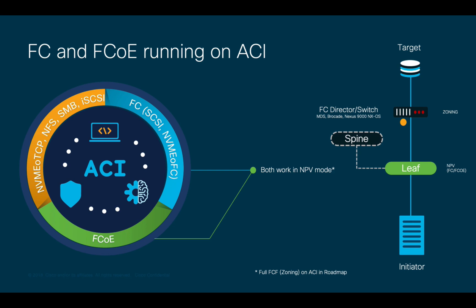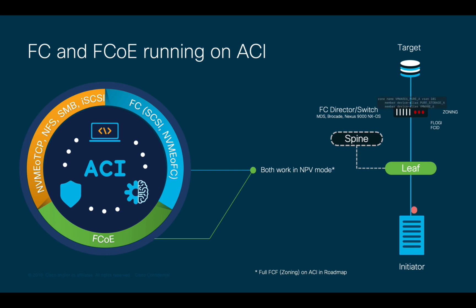It is important to mention that Fiber Channel and Fiber Channel over Ethernet is not VXLAN encapsulated. Therefore, it is not sent to the spine layer, but directly to the Fiber Channel or FCoE director. That director would then receive the Floggy and send a Fiber Channel ID back to the initiator through the NPV switch, in this case the Nexus 9K leaf node. The important thing here is that zoning, which allows initiators to talk to targets, must be defined in the external Fiber Channel director, since ACI does not support zoning as of version 5.2.